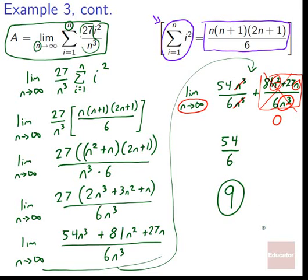Notice it takes challenging effort to work through the limit as n goes to infinity — we had to use an arcane summation formula. That's why the Fundamental Theorem of Calculus, using the antiderivative, is so powerful. Let's see how much faster that is in our final example.